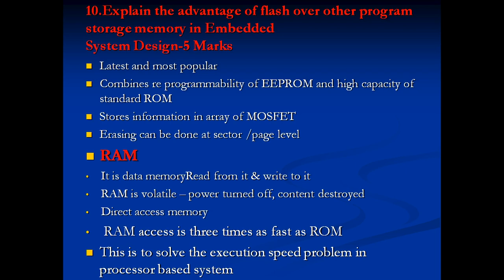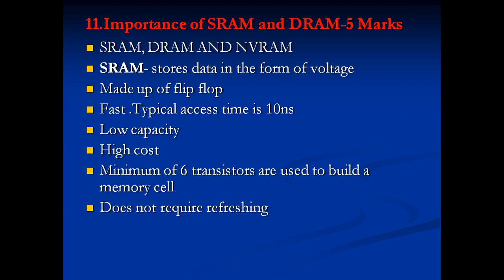RAM is the data memory — you can perform both read and write operations, and it is volatile; once power is turned off, the content is destroyed. It can be accessed directly, making it three times faster than ROM, solving the execution speed problem in processor-based systems. SRAM — Static RAM — stores data in the form of voltage levels made by flip-flops. It is very fast, taking only 10 nanoseconds to read, but has low capacity and high cost.